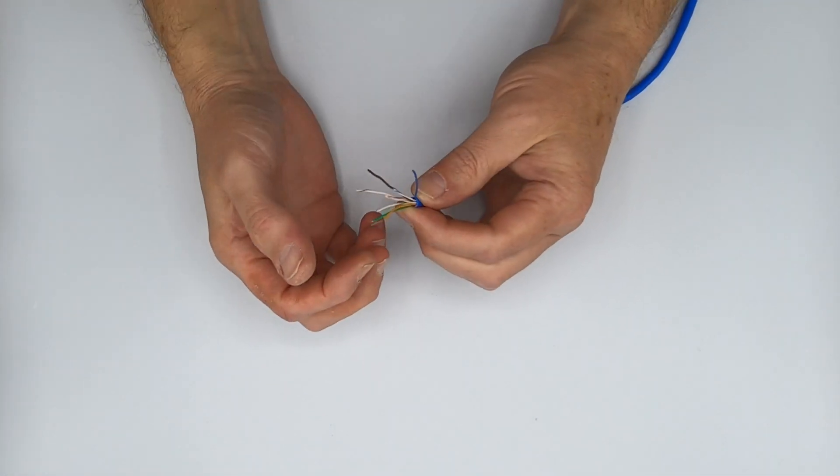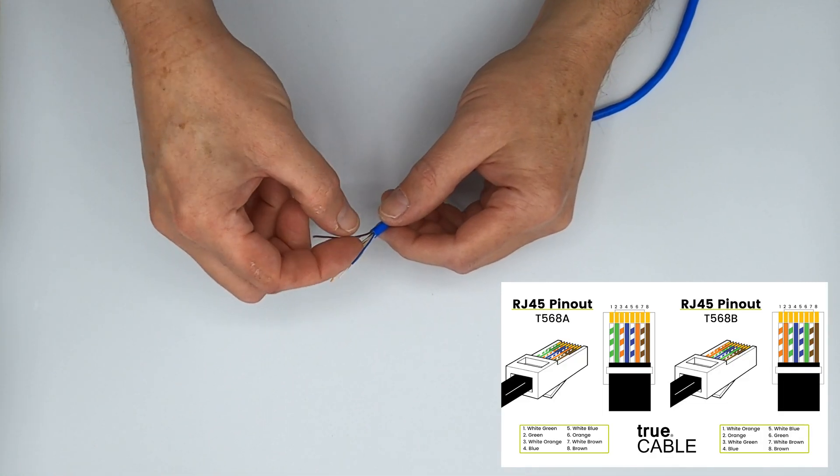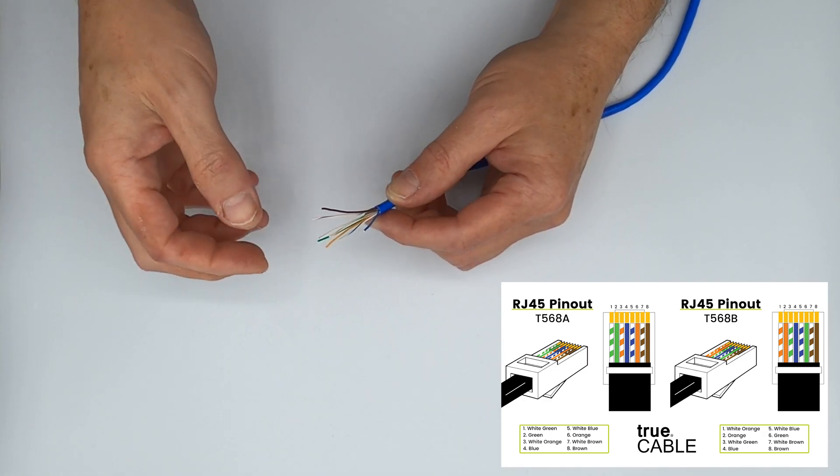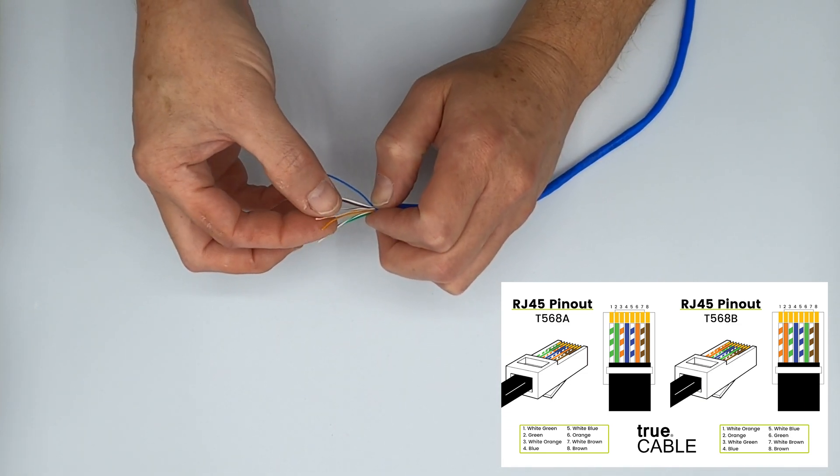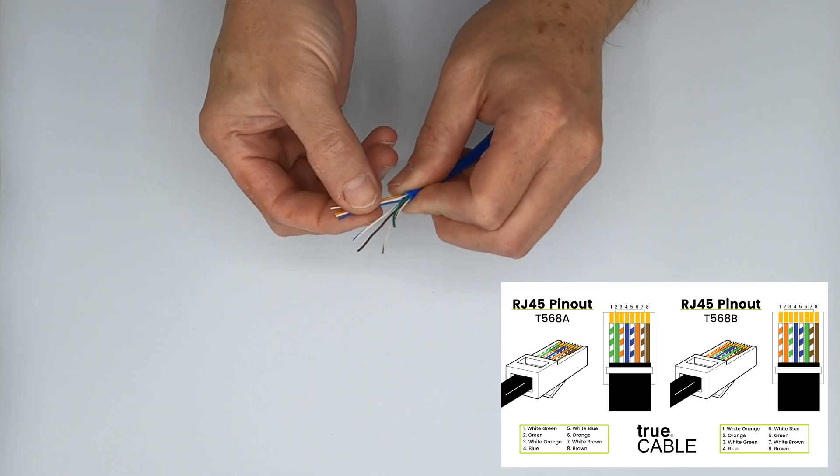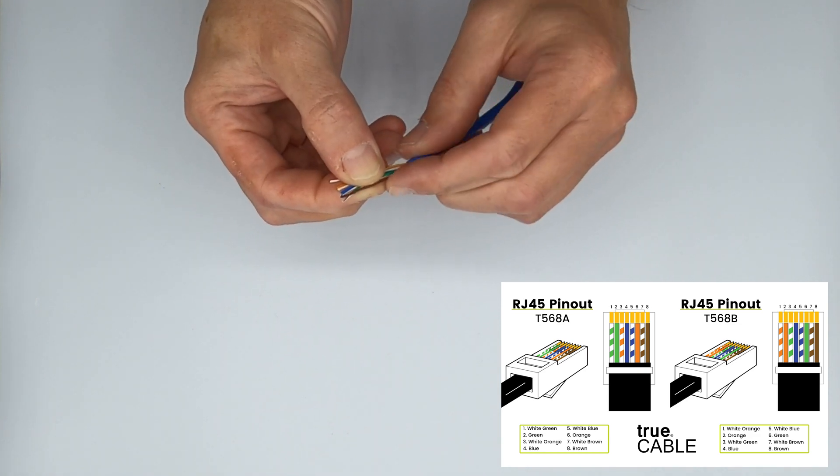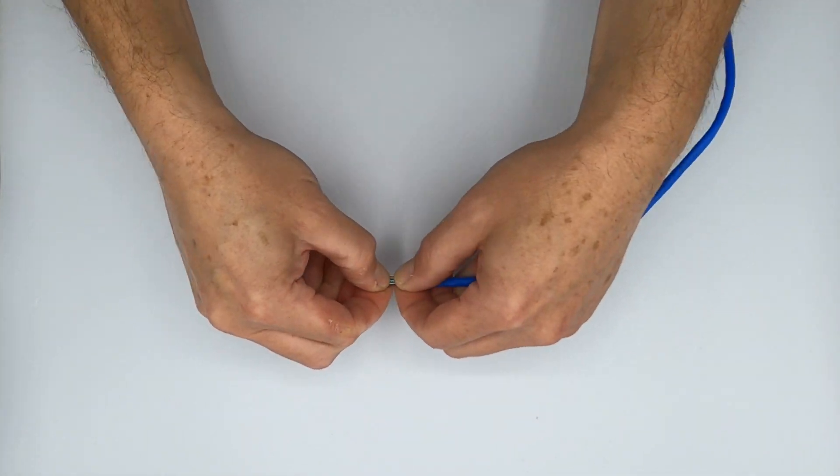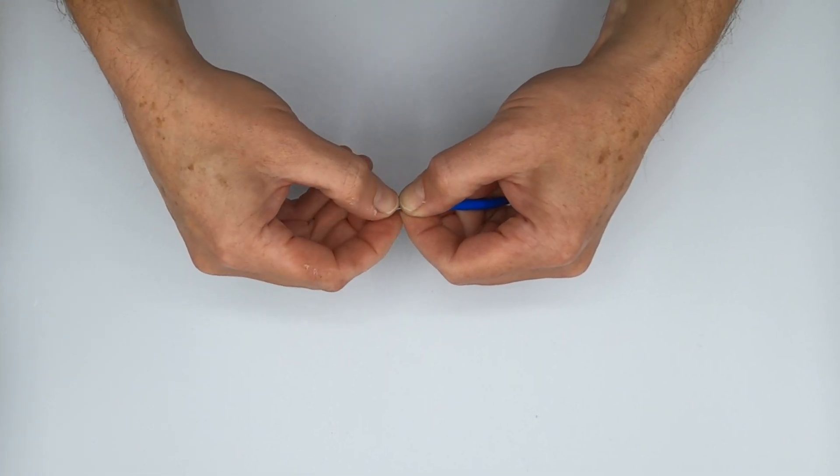The next step is to actually put them into the proper color sequence. I prefer to use the T568B sequence. You can use A, just make sure that you're using either A and A or B to B, in other words, the same on both ends. So what I do is I go white-orange, orange, white-green, blue, white-blue, green, white-brown, and brown. Put them into a nice little multi-colored stripe here so that it's easier to work with and all lined up.